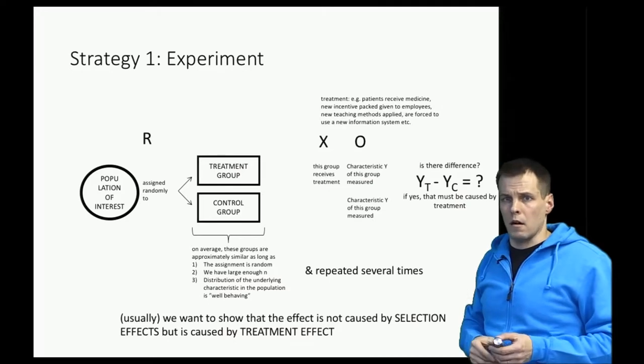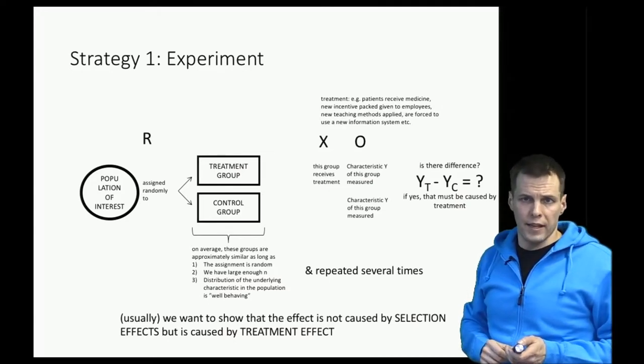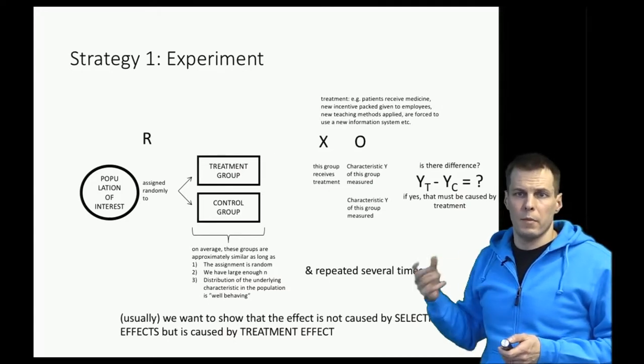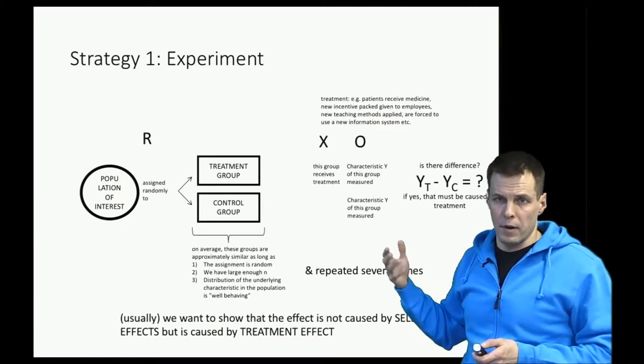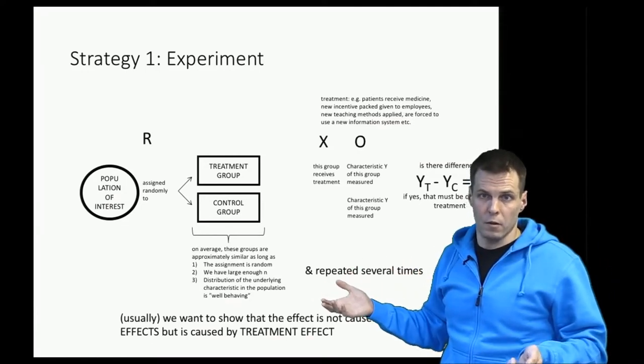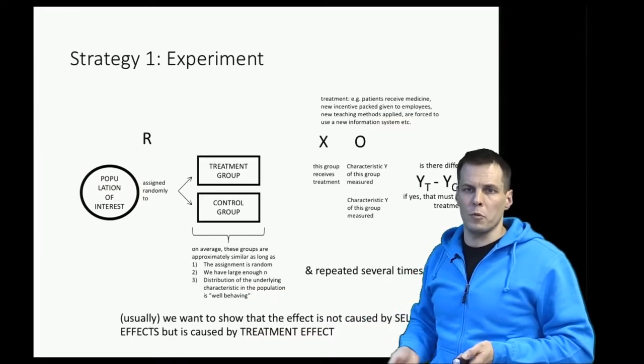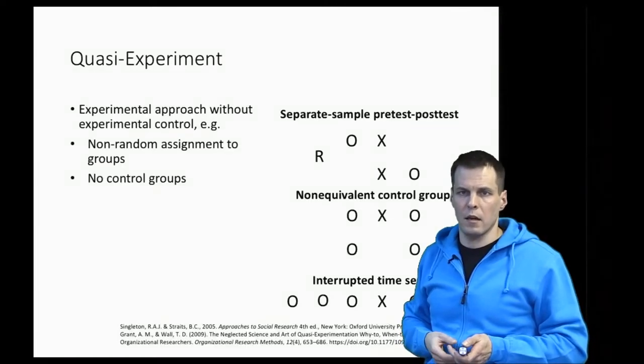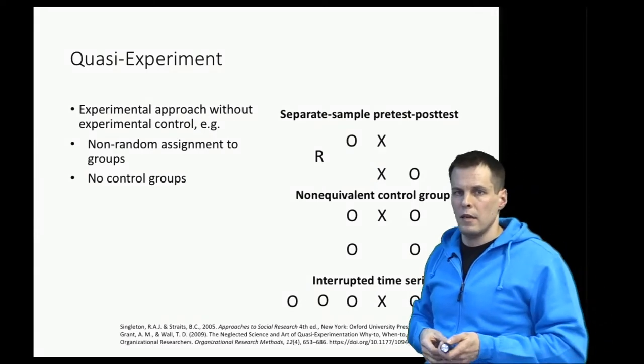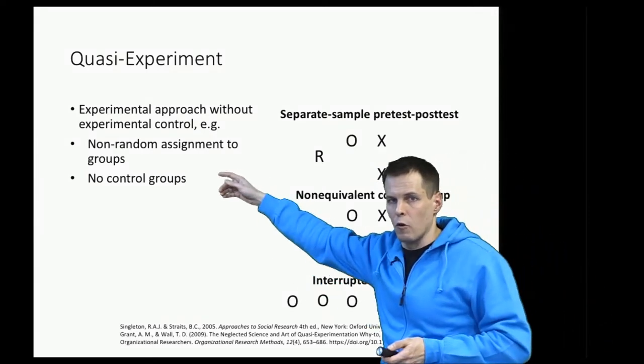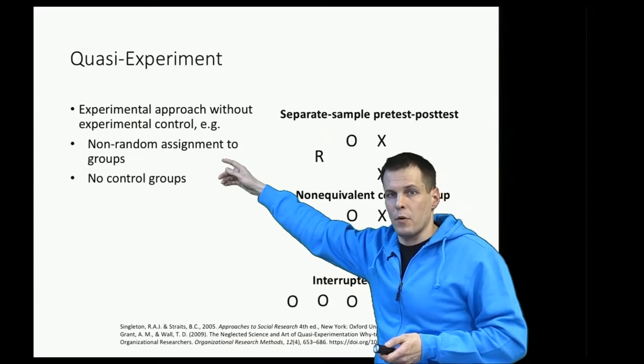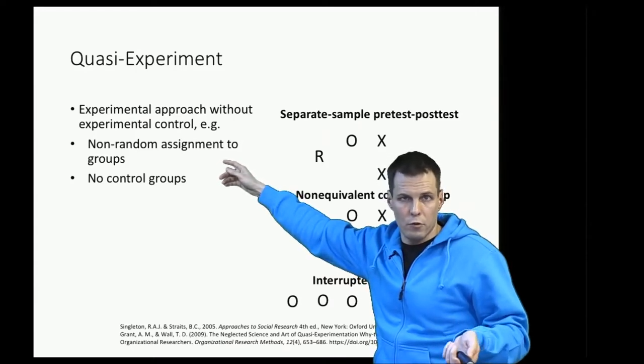Experimental designs are not always feasible. They can be done in business studies, but if we study organizations, then applying treatments to organizations could be difficult to organize. We also have a second best option called quasi-experiment. The idea of a quasi-experiment is that we have some elements of experimental approach but we don't have the full experimental control.